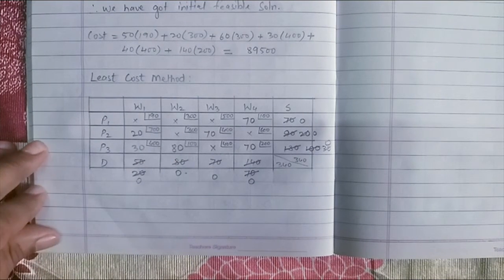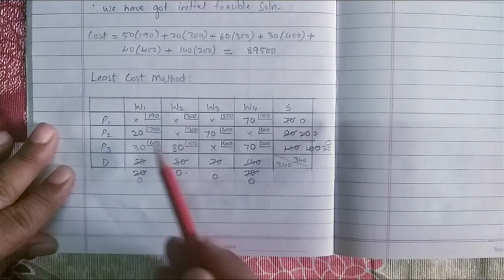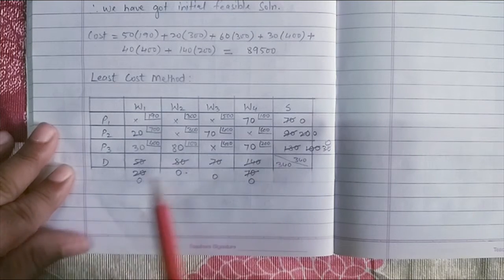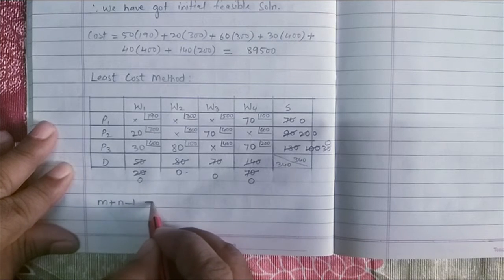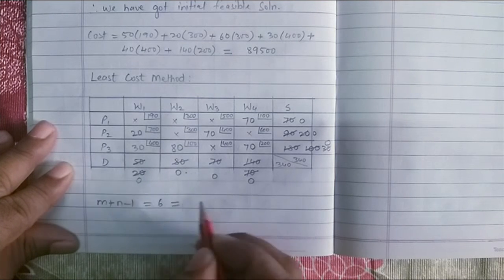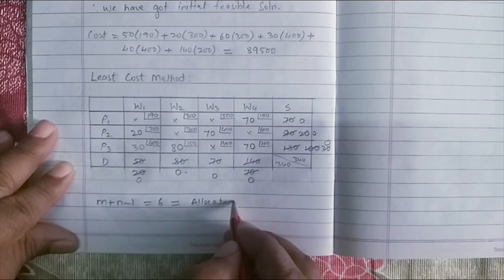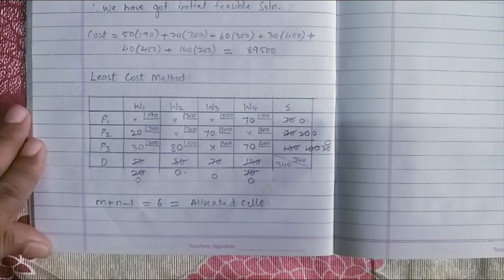Now, count the number of allocations which we have 1, 2, 3, 4, 5 and 6. M plus N minus 1 is also 6 which is allocated cells as well. Therefore, I have achieved initial feasible solution.